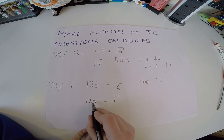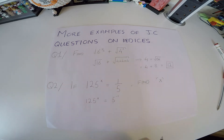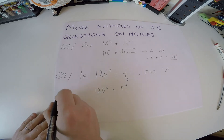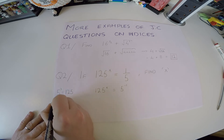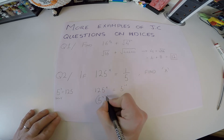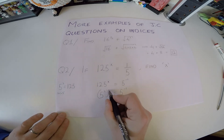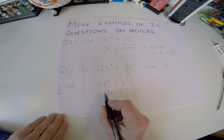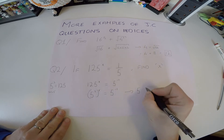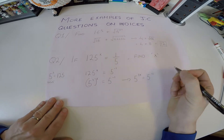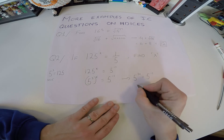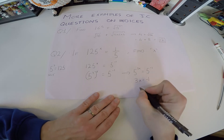Now we want to bring 125 to a similar base. Can we write 125 as 5 to the power of something? 5 cubed is 125 — that's 5 × 5 × 5. So we change 125 to 5 cubed, but we can't forget the x outside. Power to a power means we multiply, so that's 5 to the 3x, equal to 5 to the minus 1. Since the bases are the same, the powers must match: 3x = −1, so x = −1/3.